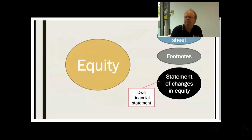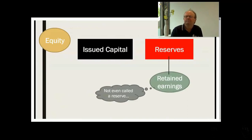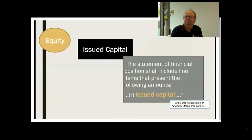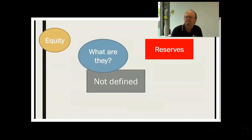The amounts of each type of equity are included in a firm's balance sheet each year, and various information is included as footnotes. Equity is a bit special as it has its own financial statement: the statement of changes in equity. For a company there are two main components of equity in the balance sheet: issued capital and reserves. A particularly important type of reserve, which is not even called a reserve, is retained earnings. Issued capital is required to be shown separately for companies — it shows the amount of assets invested by its shareholders.